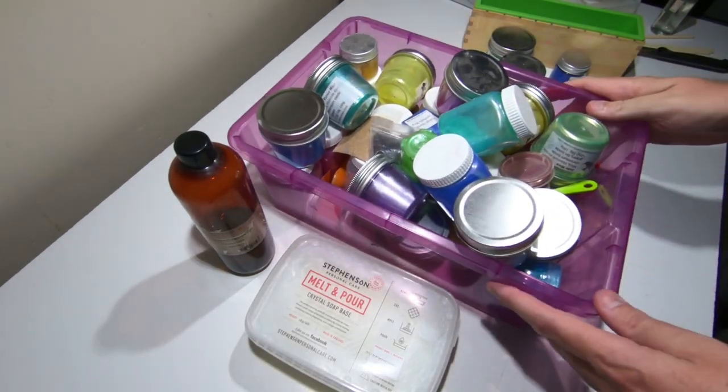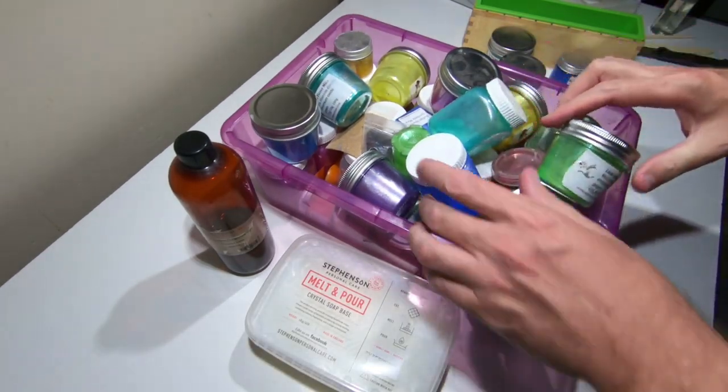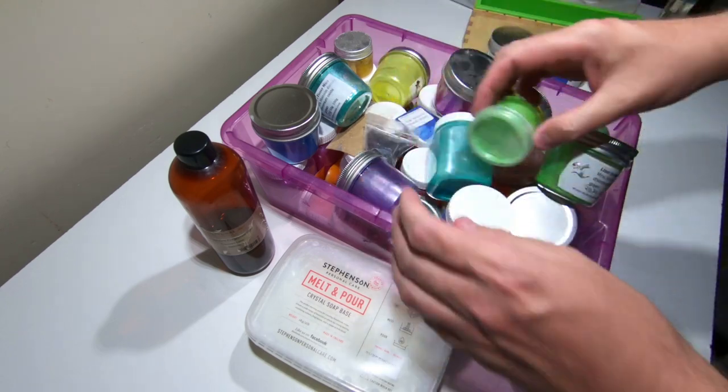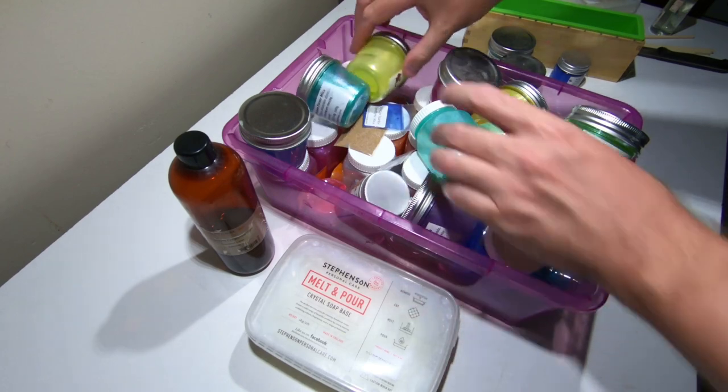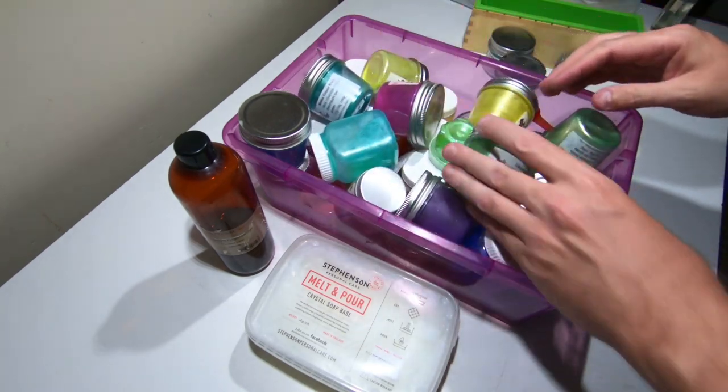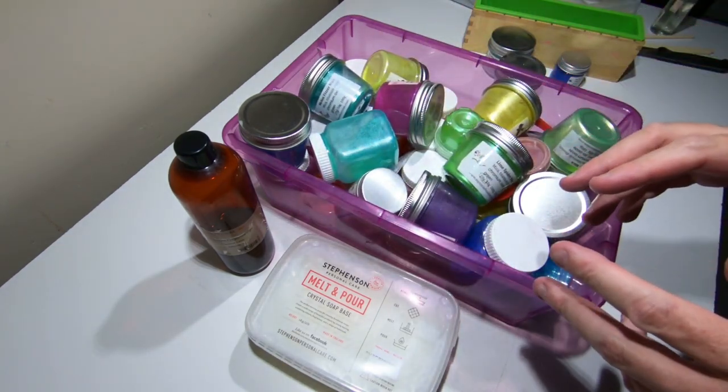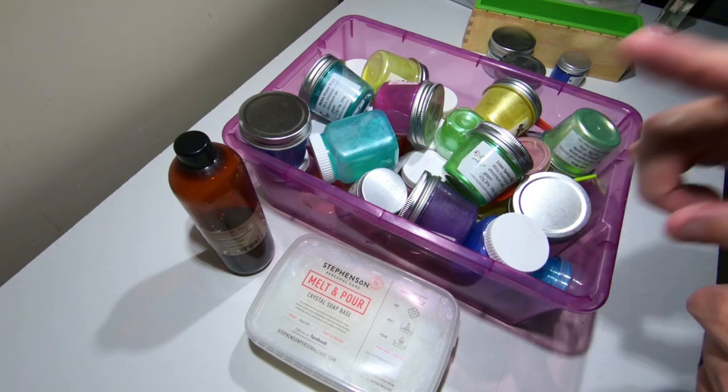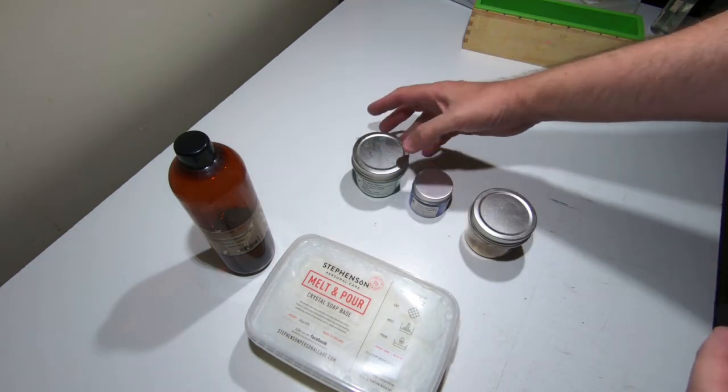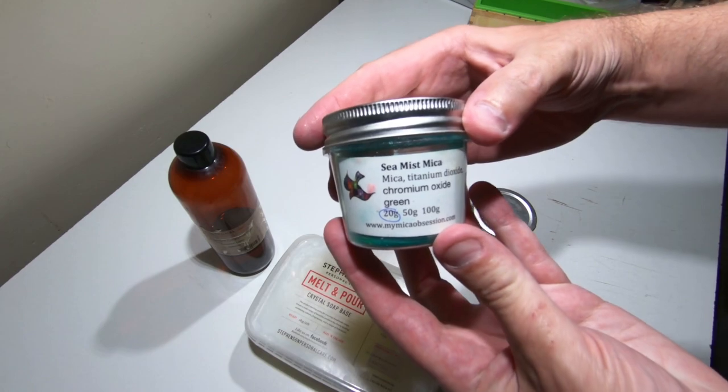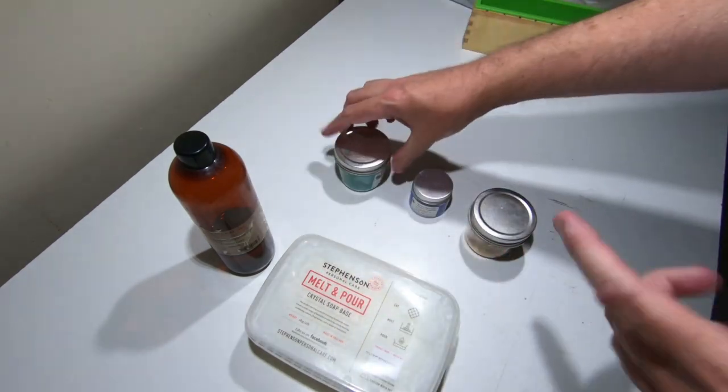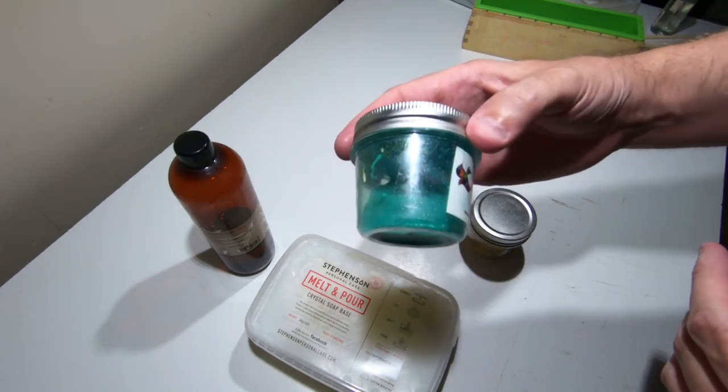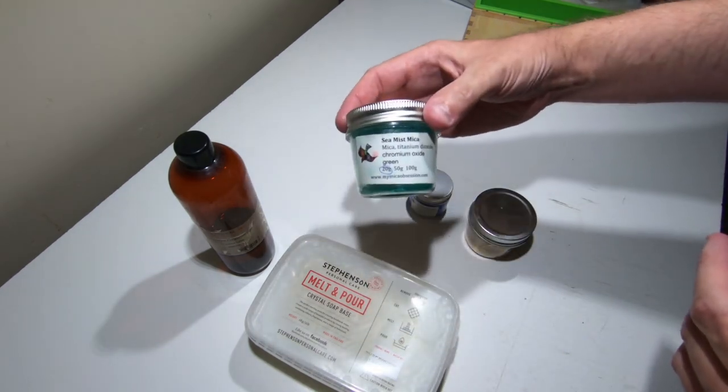For my colors, I've got a whole container. I've got like three of these containers, they're just full of micas, it's everywhere all over the place. So it was really hard for me to find three colors, but I think I've found them. My first color is Sea Mist, it's kind of like an aqua color, really beautiful, one of my favorite colors.